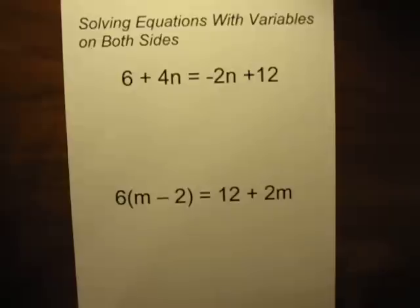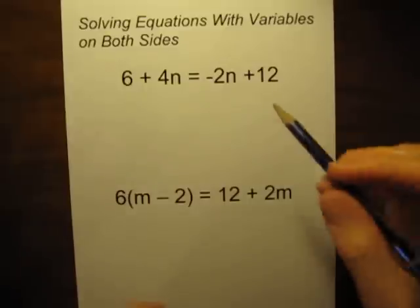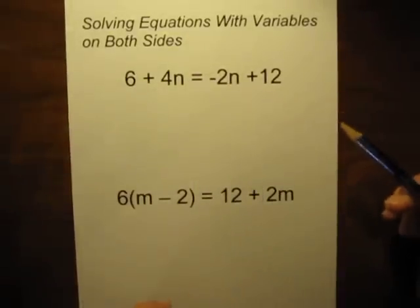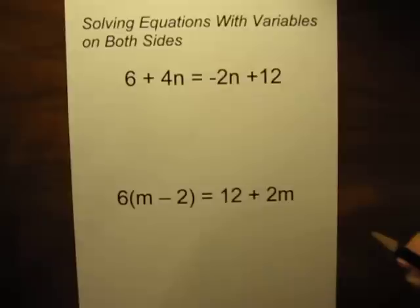The thought process though is really no different than the thought process we go through for solving any other equations. We want to get letters by themselves and the numbers by themselves. So usually what I do, it doesn't really matter, but usually I'll send the letters to the left, numbers to the right.